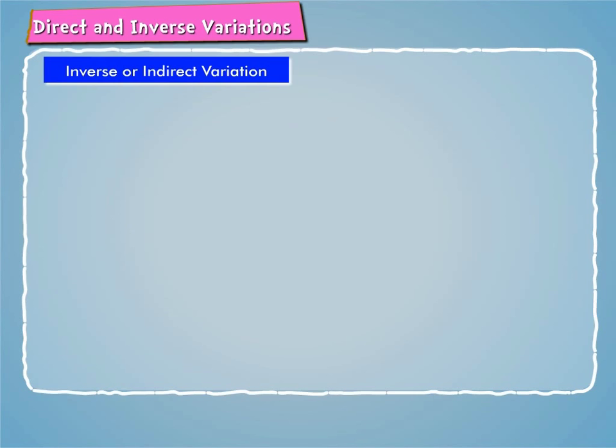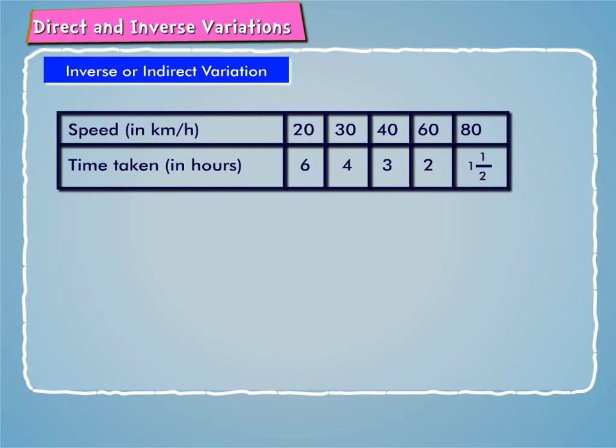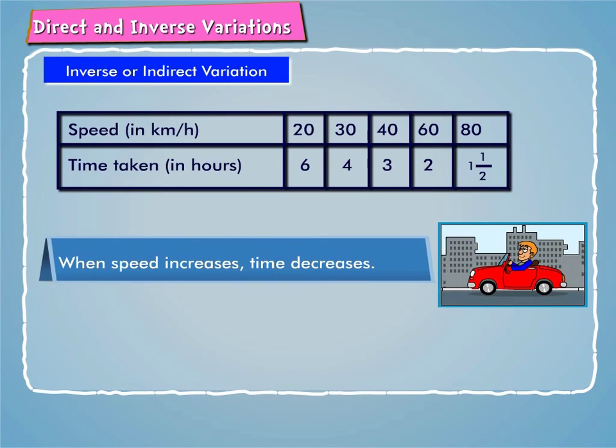Let us now learn about inverse or indirect variation. Look at the table given on screen, which depicts the time taken by a car to travel a certain distance at different speeds. When speed increases, time decreases.